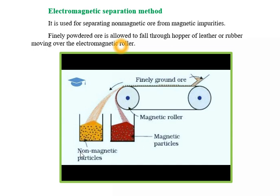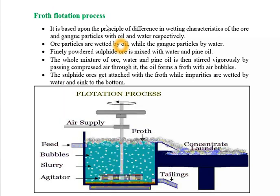The third process is froth flotation. This process is based on the principle of wetting characteristics of ore and gangue particles with oil and water. It is generally used for concentration of sulphide ores. Ore particles are wetted by oil whereas the gangue particles are wetted by water. Finally, powdered sulphide ore is mixed with water and oil, and the whole mixture is stirred vigorously.